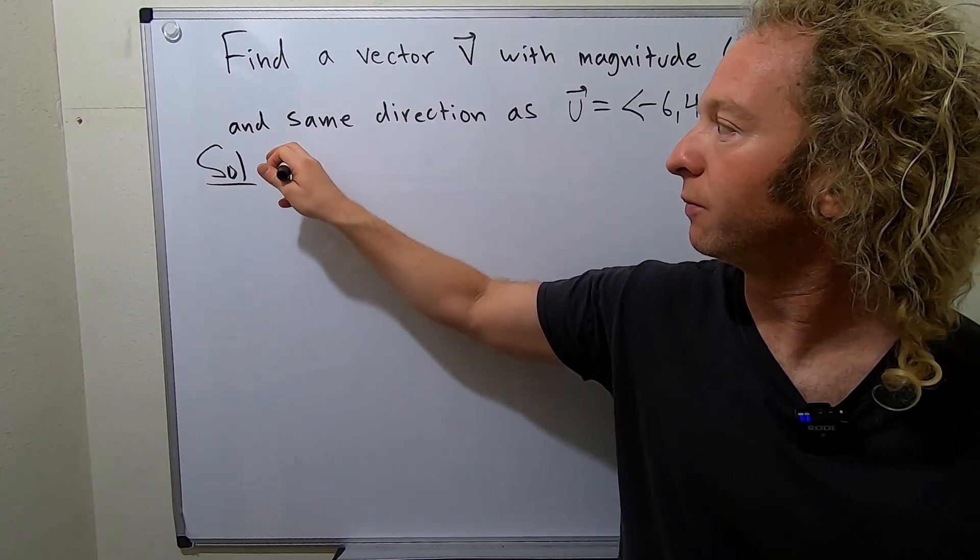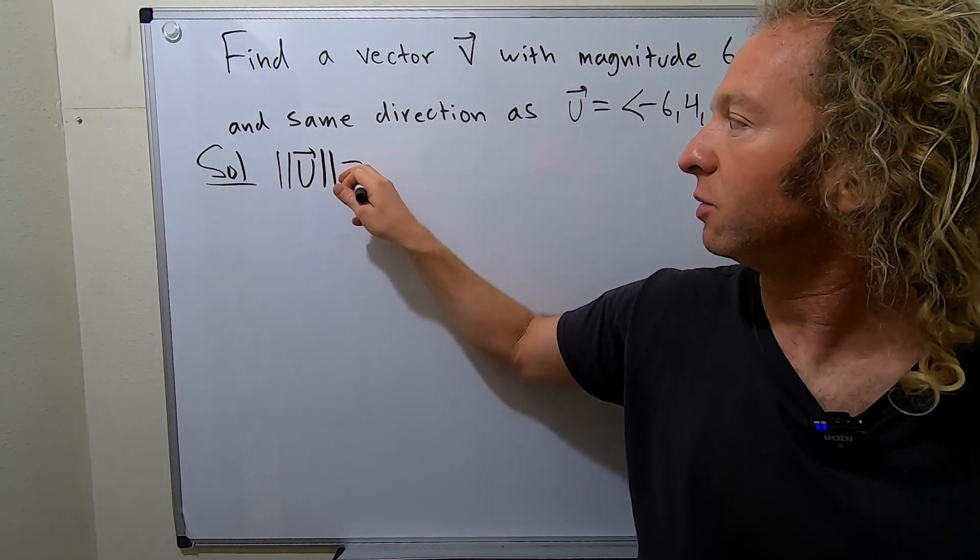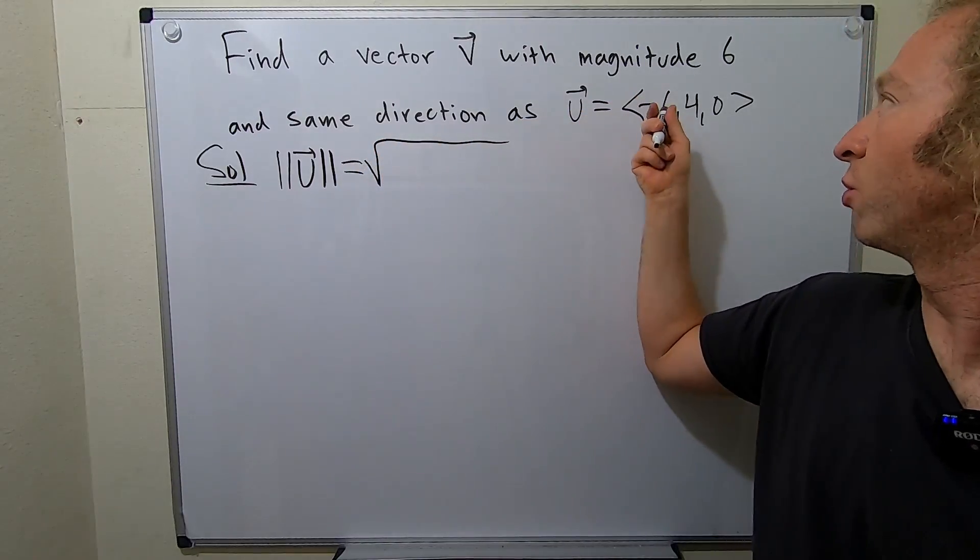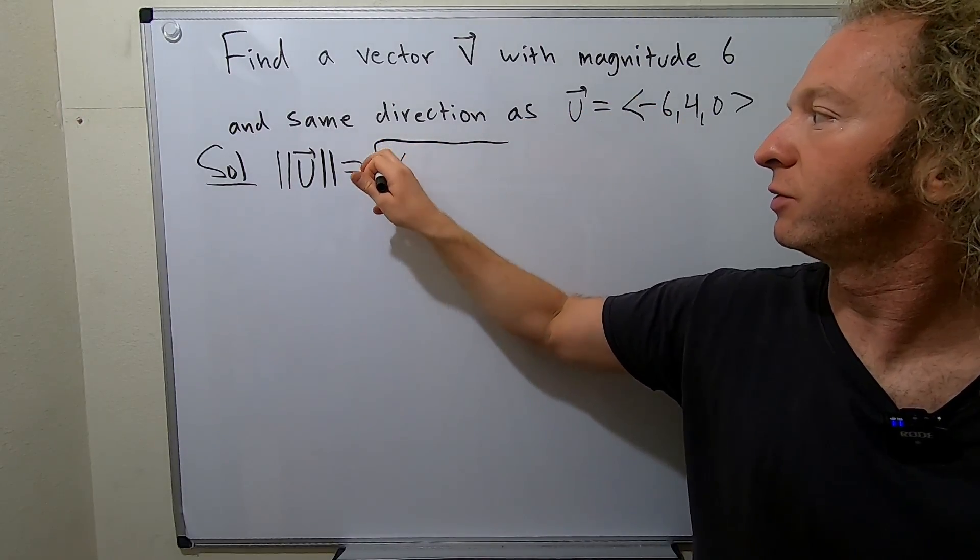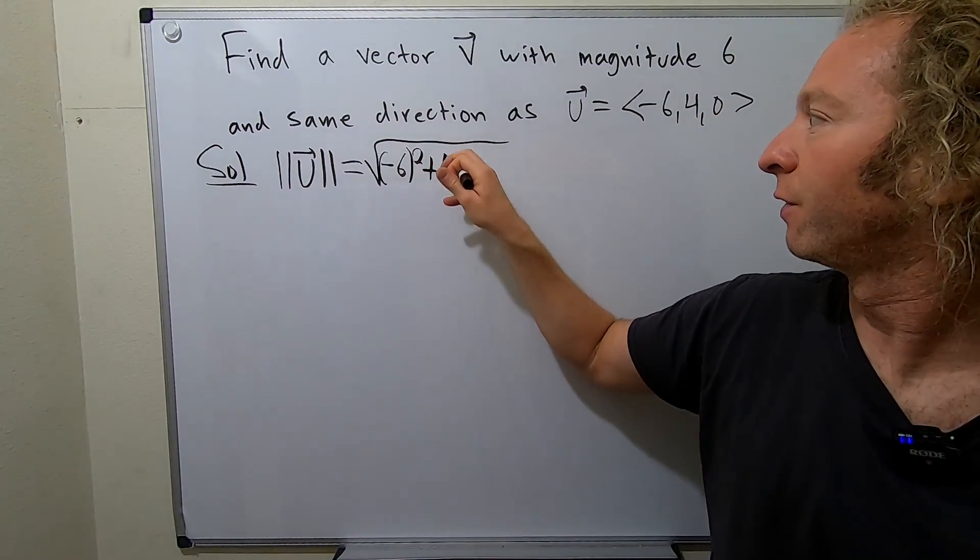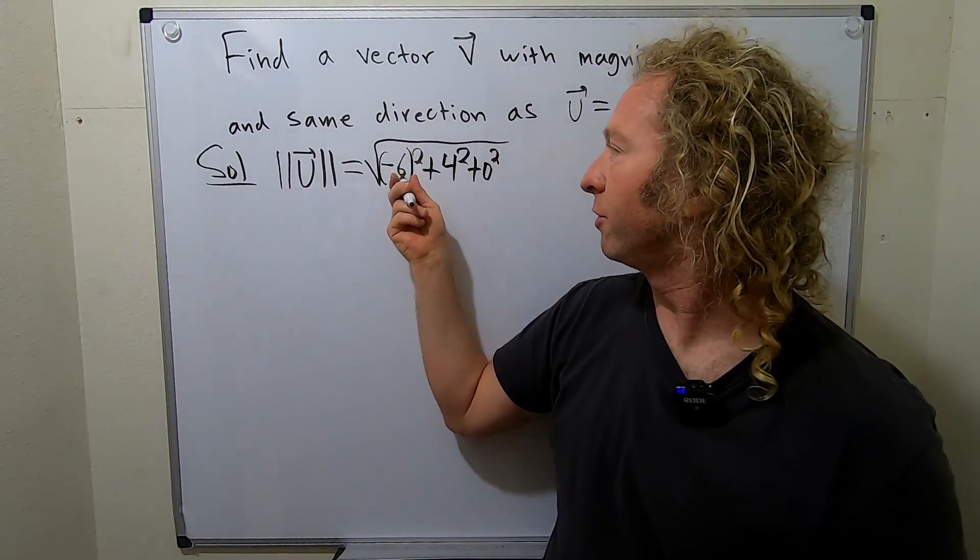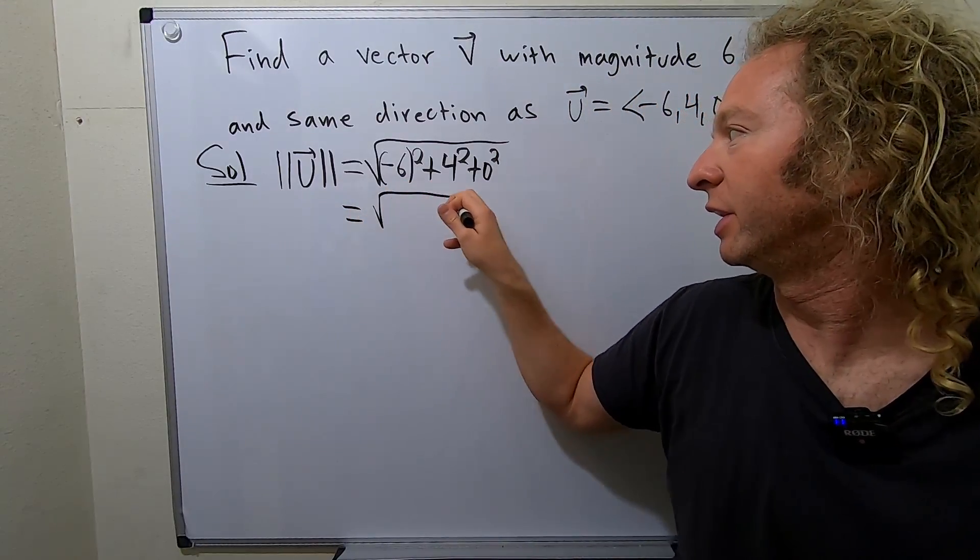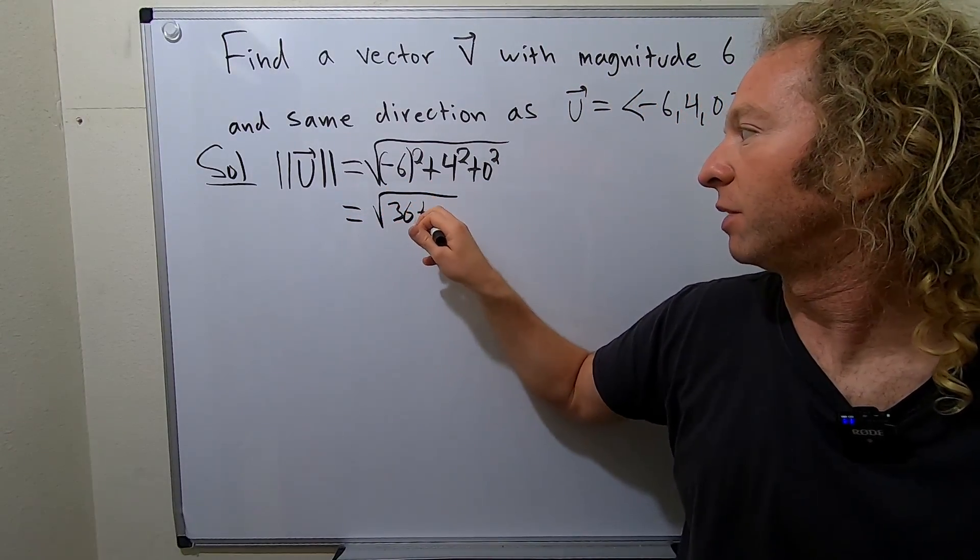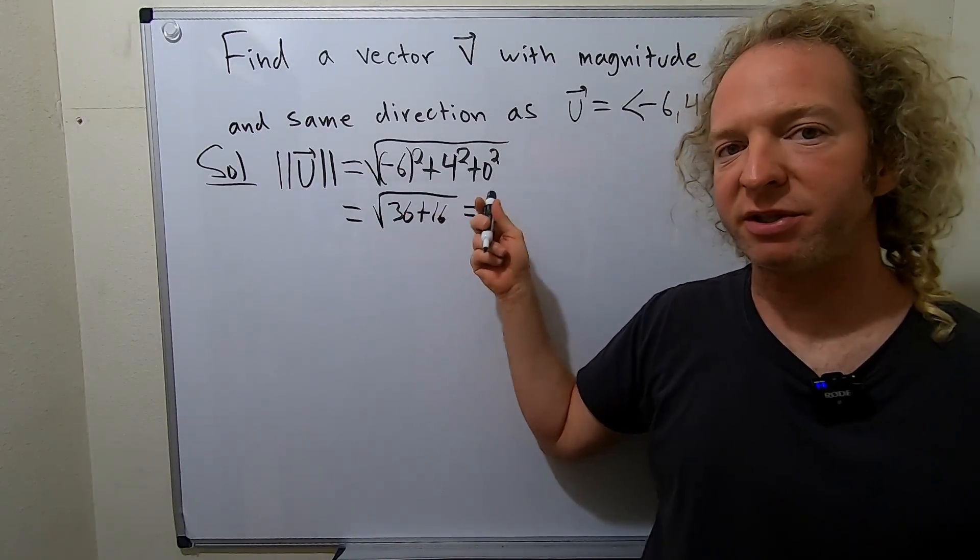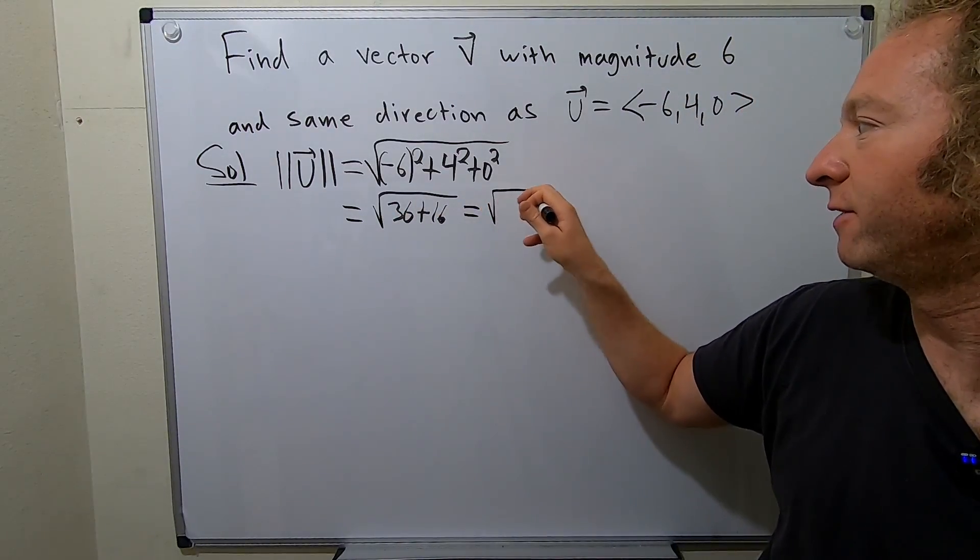So the magnitude of U is equal to the square root, and so you square the components, plus 4 squared, plus 0 squared. So it'll be 36 plus 16, let's see, 10 plus 6 is 46, plus 6 is 52, square root of 52.